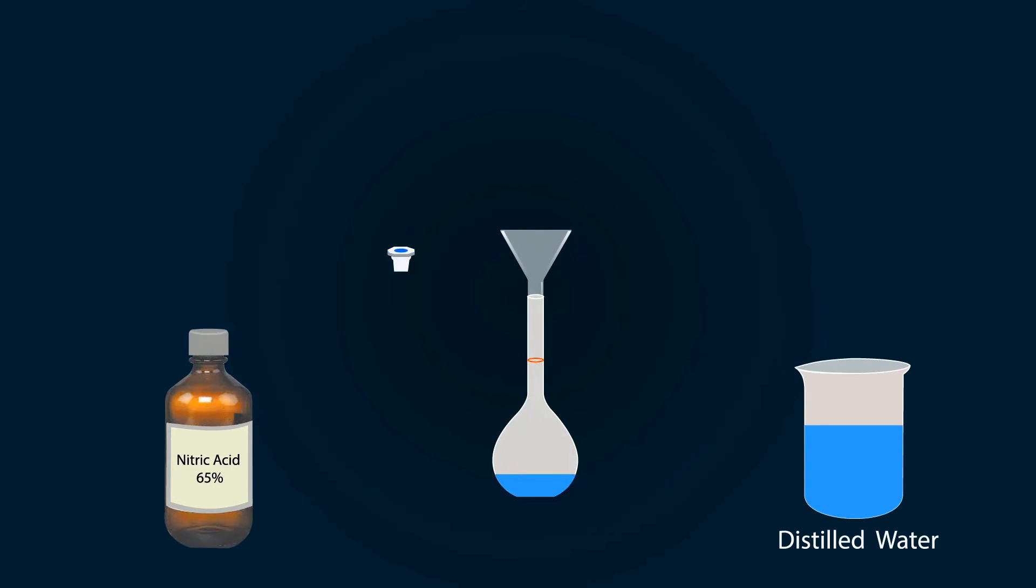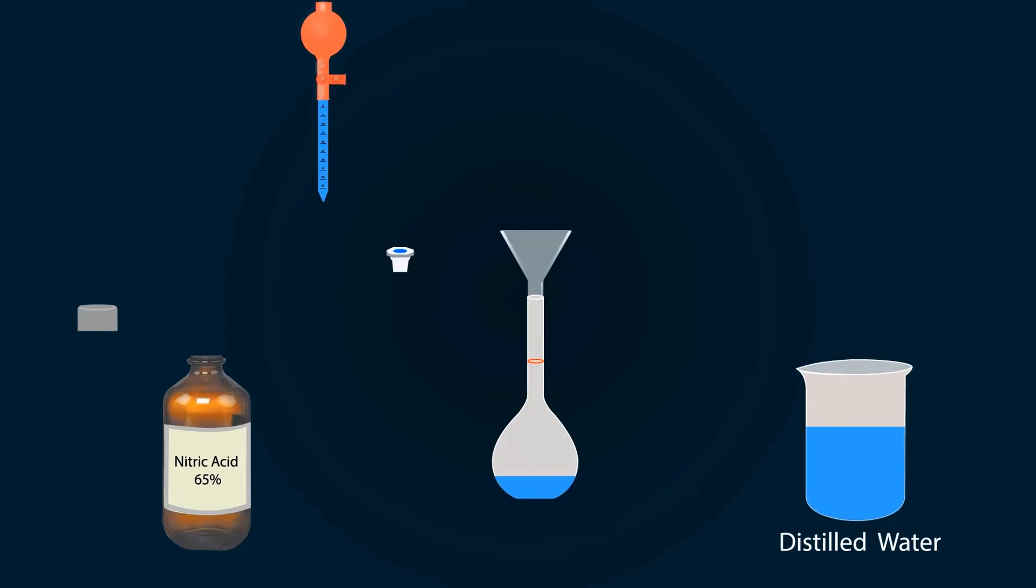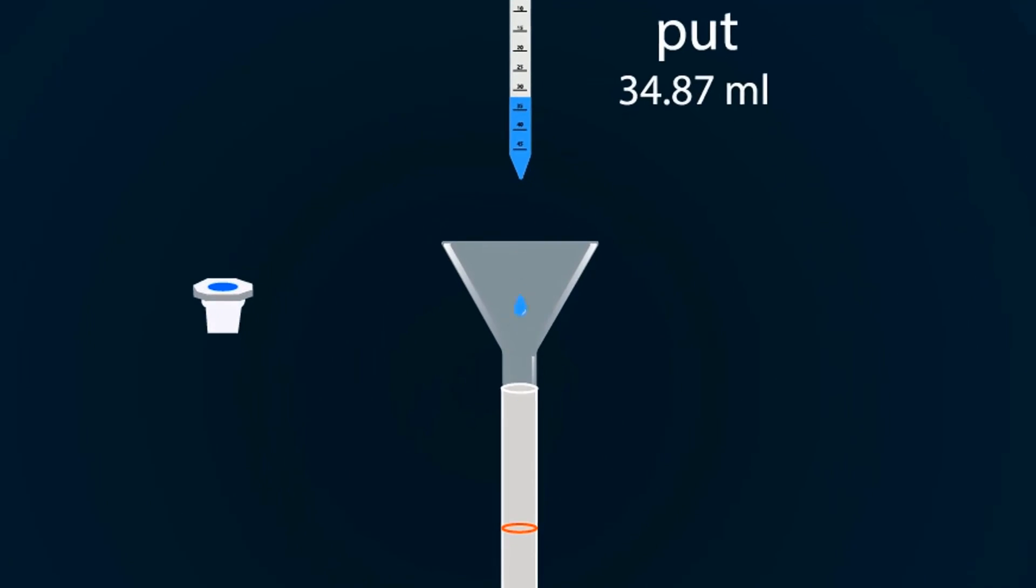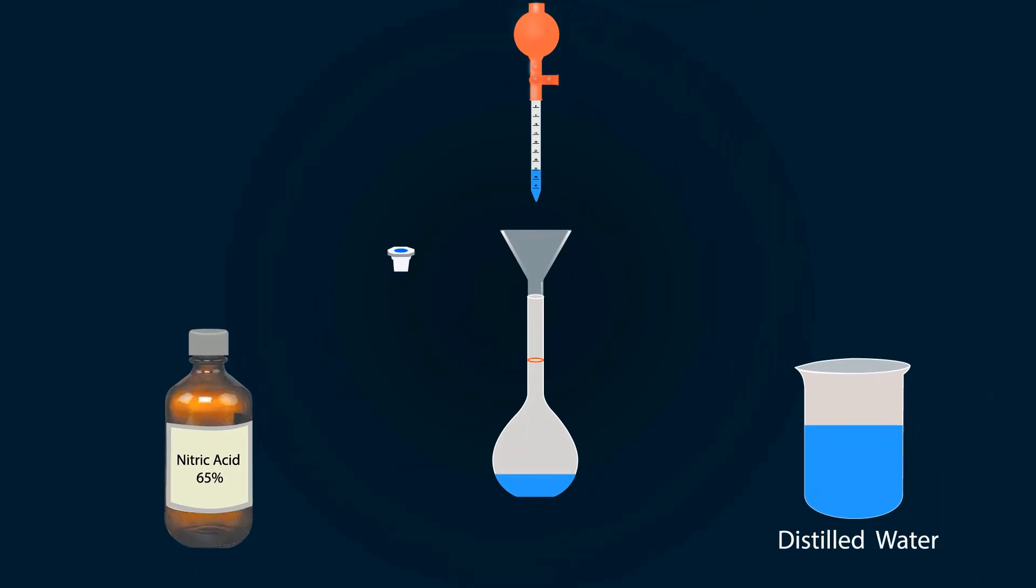because it may burst down. Now put nitric acid into the measuring flask up to 34.87 milliliters. Now fill the measuring flask up to the red point, which is 500 milliliters.